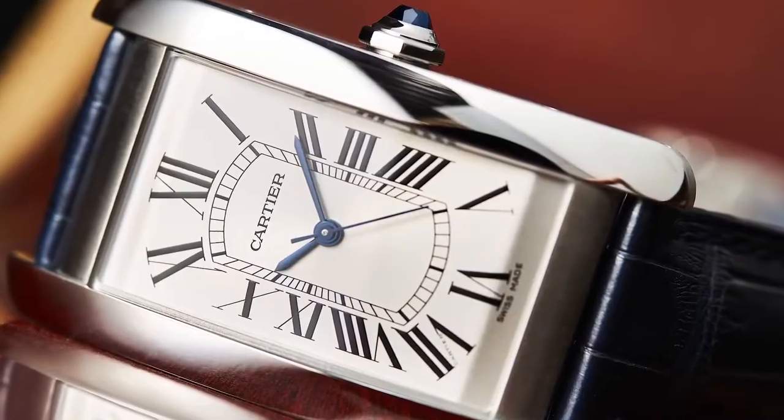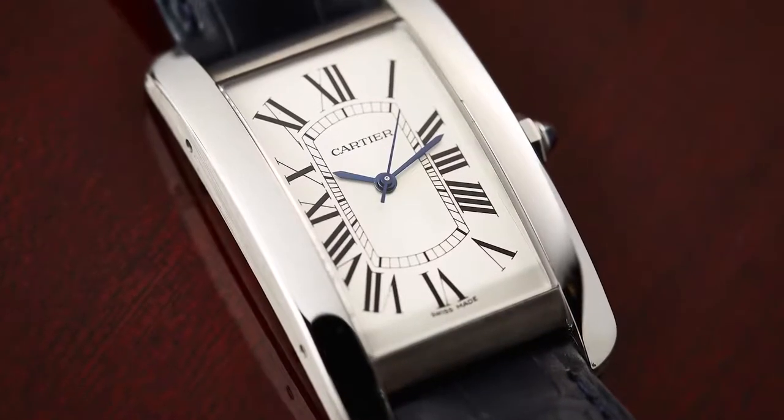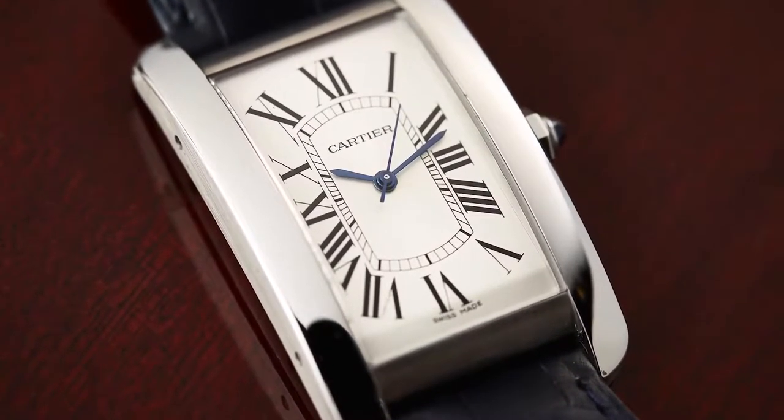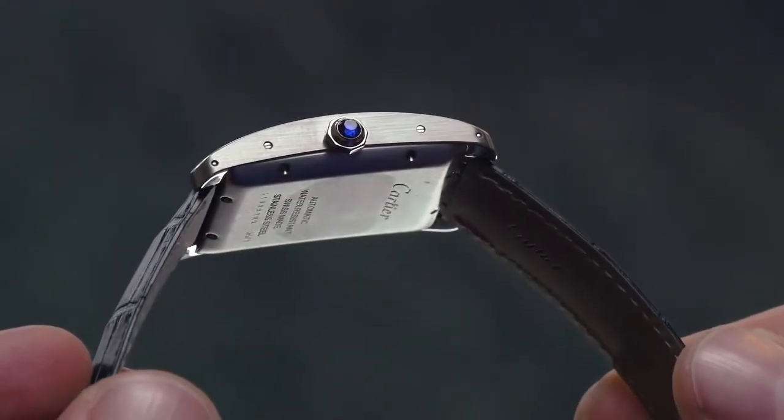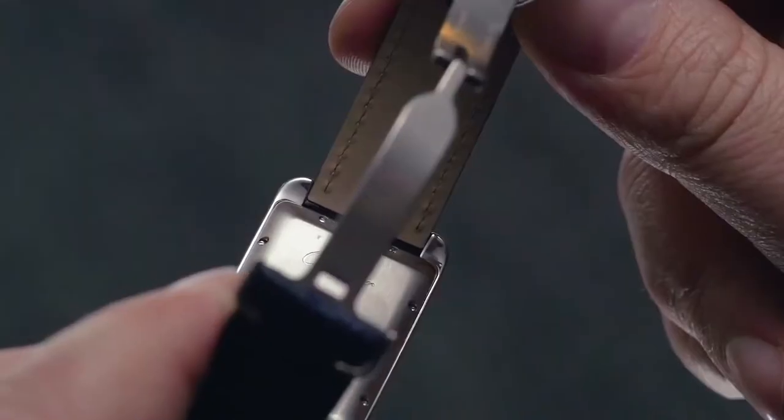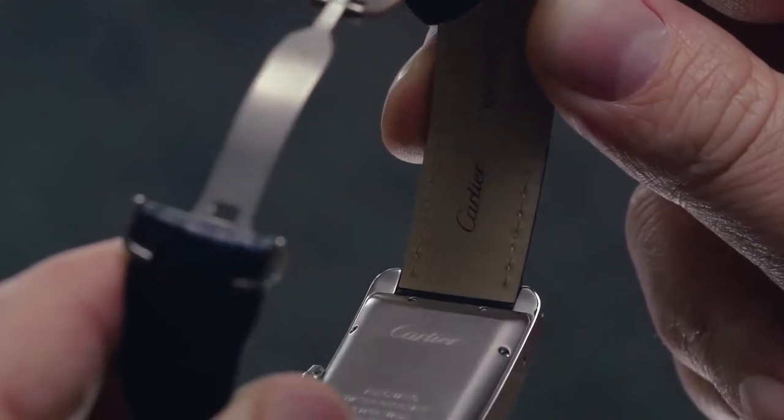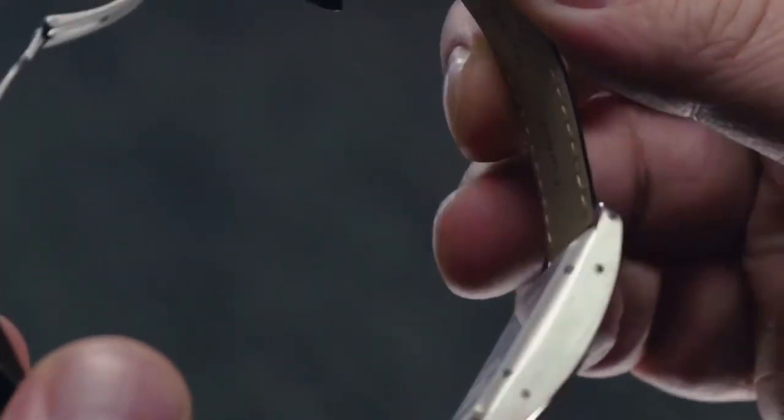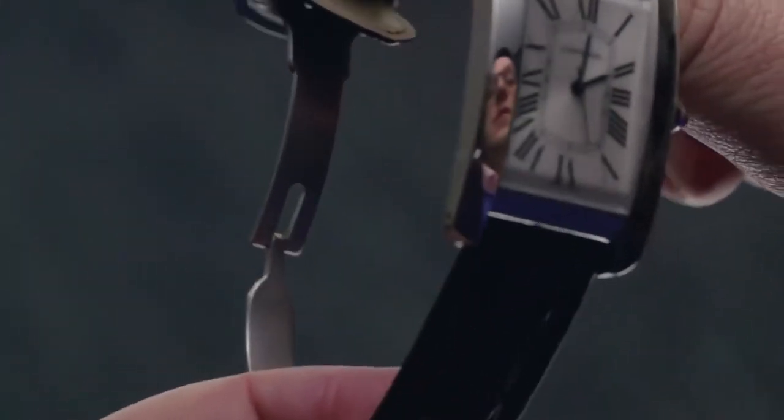The most exciting development on this Americane is that it's cased, for the first time, in stainless steel. This means that the Tank is accessible like never before. And if you've previously written off the Tank as more of a dainty dress watch, I'd suggest you try on this large automatic model for size.